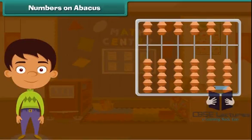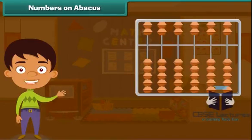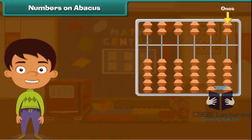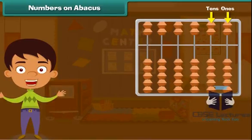Each vertical rod in the abacus represents a place. The rightmost rod represents the ones place. The rod to its left represents the tens place, and so on.